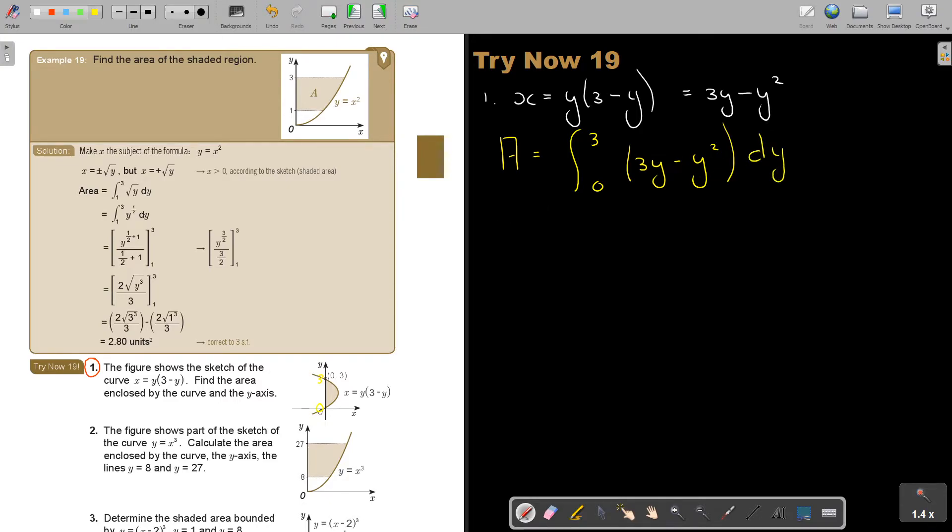And then I'm going to say 3y minus y squared and I'm going to integrate towards y. So I'm going to get 3y squared over 2 minus y cubed over 3. Okay, and then I integrate it. And then I substitute.